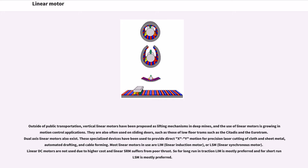Outside of public transportation, vertical linear motors have been proposed as lifting mechanisms in deep mines, and the use of linear motors is growing in motion control applications. They are also often used on sliding doors, such as those of low-floor trams such as the Citadis and the Eurotram. Dual-axis linear motors also exist. These specialized devices have been used to provide direct X-Y motion for precision laser cutting of cloth and sheet metal, automated drafting, and cable forming.